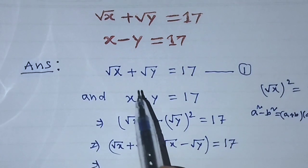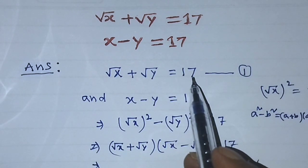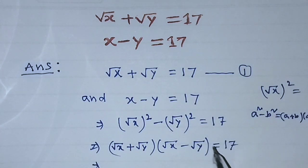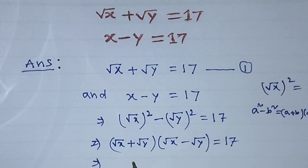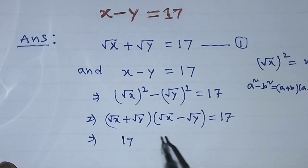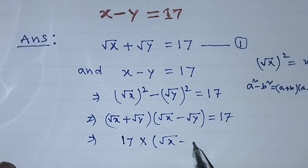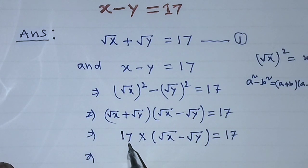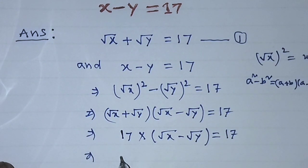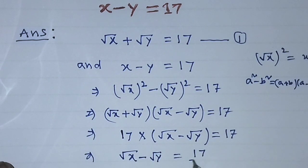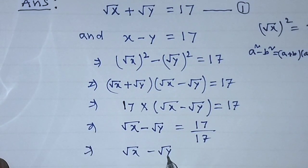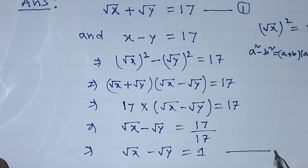We know that the value of root over of x plus root over of y is equal to 17. So we substitute that value into this equation, giving us 17 into root over of x minus root over of y is equal to 17. Transposing 17 from the left hand side, we get root over of x minus root over of y is equal to 17 over 17, which equals 1.